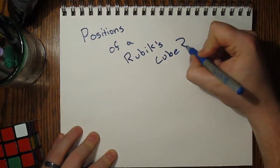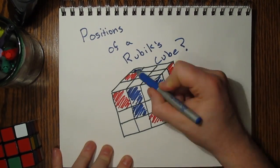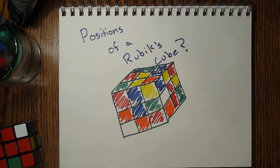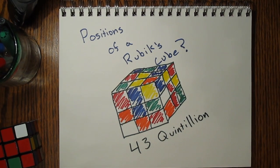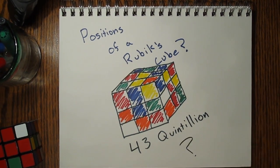So how many positions can one twist a Rubik's Cube? It turns out the answer is 43 quintillion. 43 quintillion sounds big, but just how big is it? Well, here's one way we can think about it.